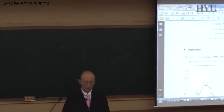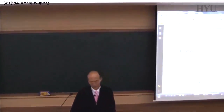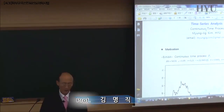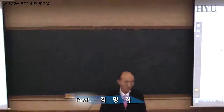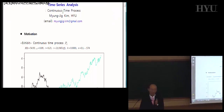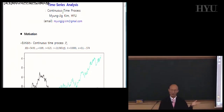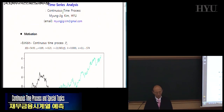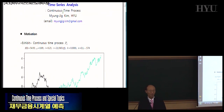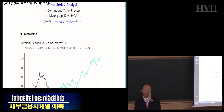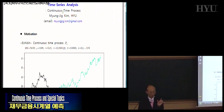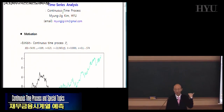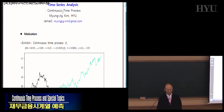So far, we have tried to model discrete time processes. By discrete, what I mean is processes with a fixed frequency, like quarterly, monthly, or daily. But what if we divide that time period into very small intervals? That's the idea of this continuous time process.